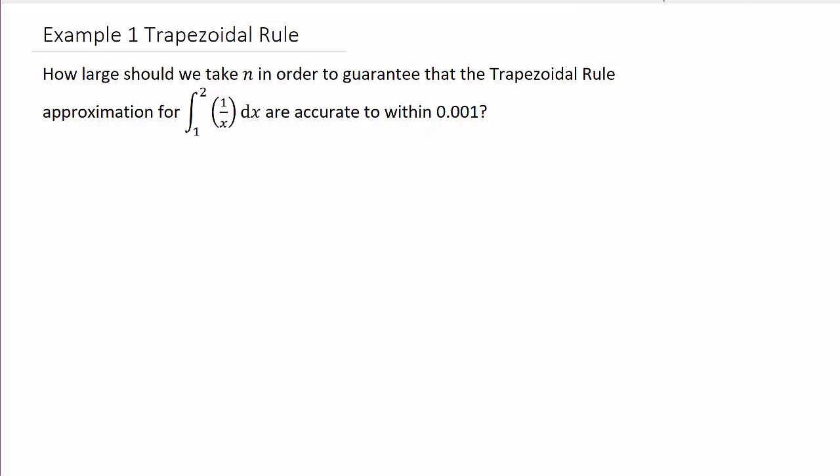All right, so if you remember from the trapezoidal rule, we've got the error is less than or equal to k times b minus a cubed over 12n squared. Okay, so what we need to do is find k, all right, and then we know we want our error to be less than or equal to the point zero zero one.